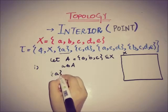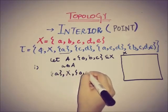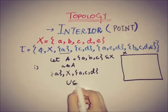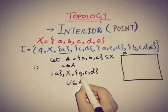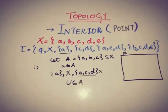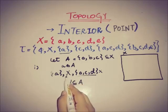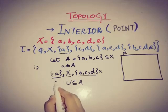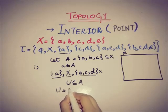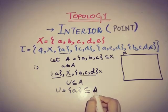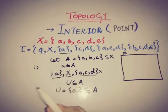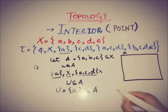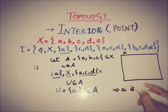There are three open neighborhoods of a: the first is {a}, the second is X, and the third is {a,c,d}. We are interested in an open neighborhood that is a subset of A. Looking at {a,c,d}, this is not a subset of A, so we are not interested in it — same with X. But the set {a} is of our interest, so U = {a} and it is a subset of A. This means a satisfies the condition, so a is an interior point of the set A.